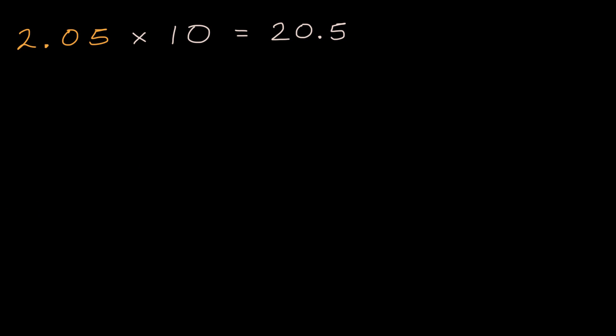Now what if we go the other way around? What is 2.05 divided by 10? Pause the video and see if you can figure that out. Well, all our digits are going to shift one place to the right because we're dividing by 10. We could also view that as multiplying by one-tenth.